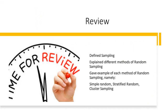In the second lesson on sampling, we saw how we define sampling. We explained different methods of random sampling and gave examples of each method, namely simple random, stratified random, and cluster sampling.